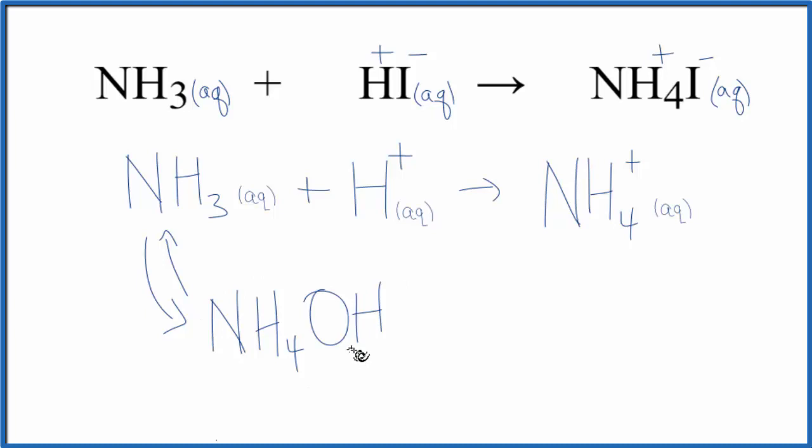We could write a net ionic equation for ammonium hydroxide plus hydroiotic acid as well. There's a link in the description of this video on how to do that. But, it's interesting to note that that net ionic equation would be different from the one we came up with in this video.